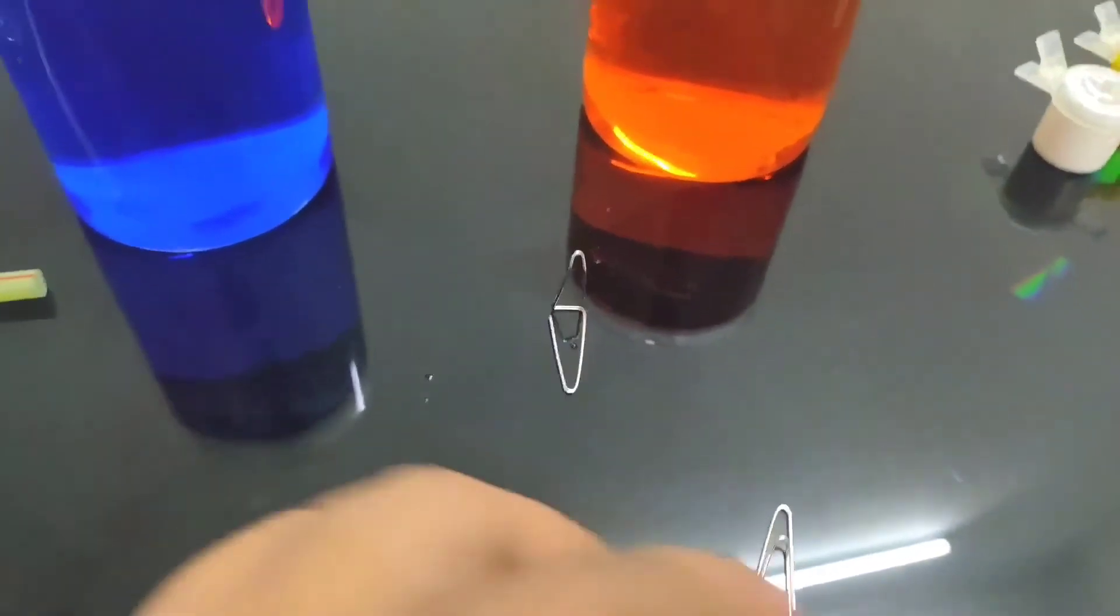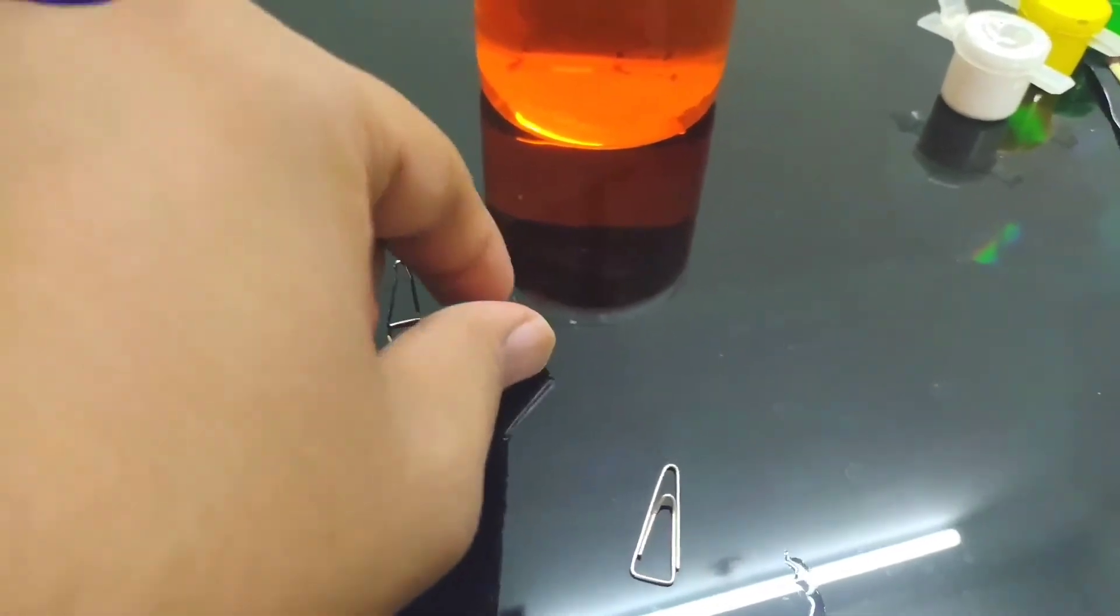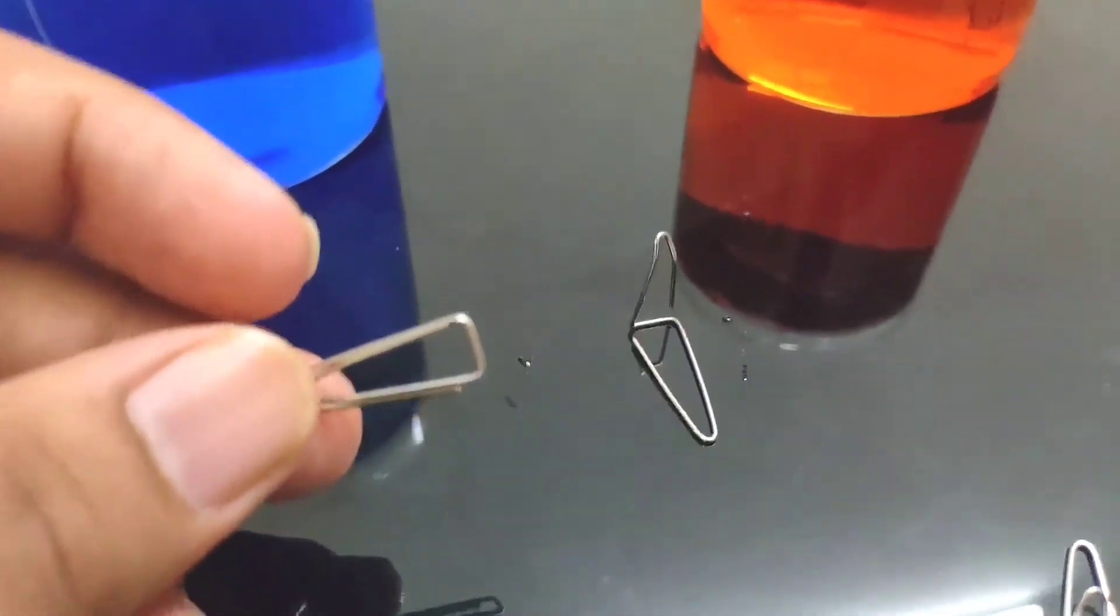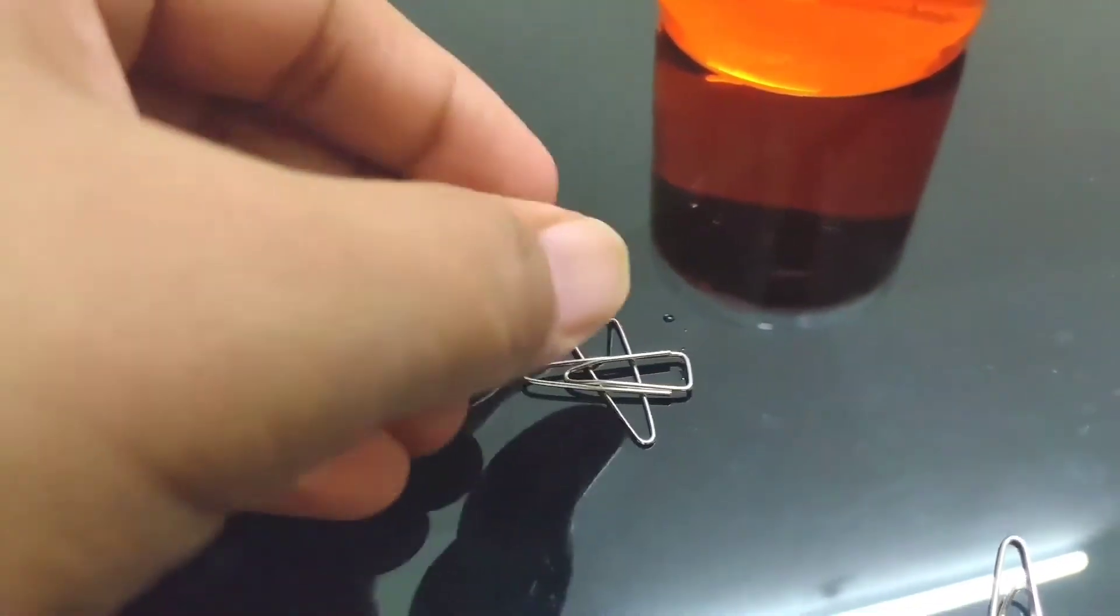I'll show you one more time so you understand the technique, as many people have problems floating paper clips on the water surface. It's simple - create this mechanism with the paper clip at a 90-degree angle, place the paper clip on top, put it up, and as you place it in water it will float, just like this.